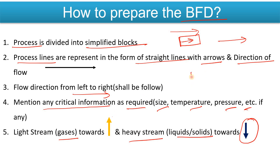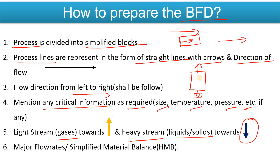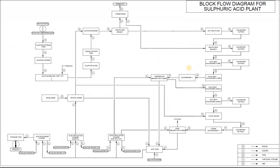Light streams like gases can be represented going upward, and heavy streams like liquids or solids going downward. For example, if there is a tank and gases are generating from it, the gas stream will be shown going upward. If there is a solid or residual stream, it will go downward from the bottom. You can also show major flow rates or a simplified material balance — also called HMB — here. Gases and off-gases are always expressed going from the upper end of the equipment, while liquids and solids go from the bottom side.